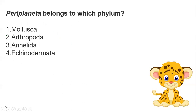Next question: Periplaneta belongs to which phylum? Options are Mollusca, Arthropoda, Annelida, or Echinodermata. Periplaneta americana is the scientific name for cockroach. Cockroach is an insect and belongs to phylum Arthropoda. That is the correct answer.